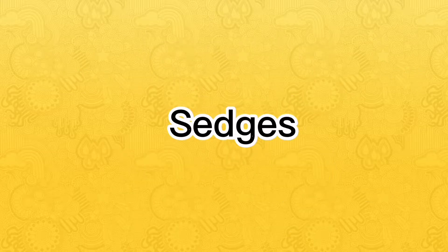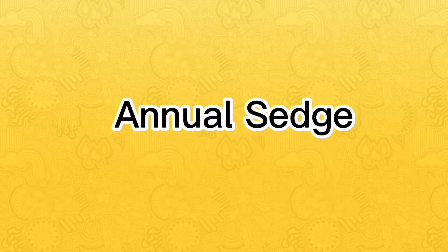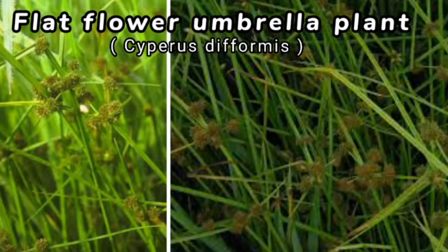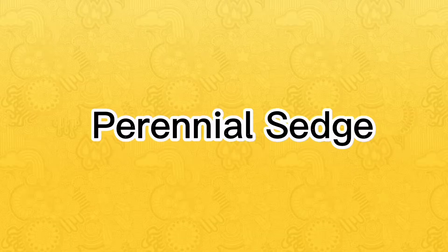For sedges: sedges that belong to annual are Flat Sedge and Flat Flower Umbrella Plant. Sedges that belong to perennial is Purple Nut Sedge.